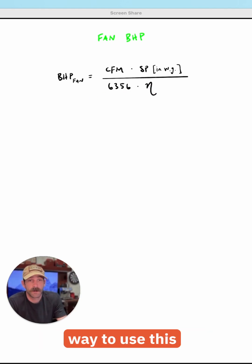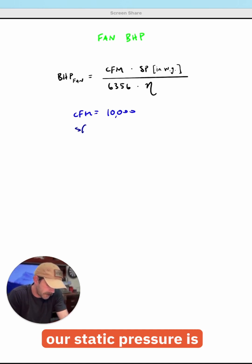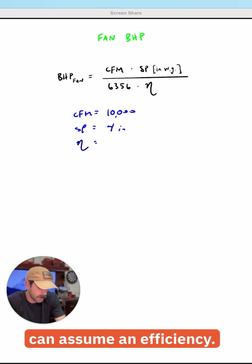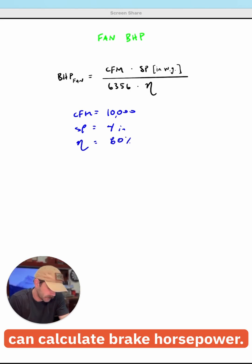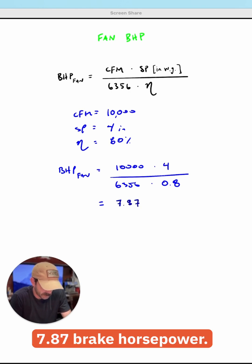So the first way to use this equation is we have a set of system requirements and we want to determine how much power we need from the fan. Let's say our CFM is equal to 10,000 and our static pressure is equal to 4 inches. If you're looking at a particular fan model, you might be able to find the efficiency. If not, you can assume an efficiency. We'll say it's 80%. And now we can calculate brake horsepower. So running these numbers, we end up with 7.87 brake horsepower.